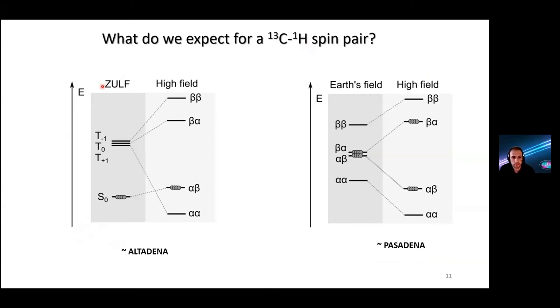So what do we expect for a simplified carbon-13 proton spin pair if we do irradiation in zero field where carbon-13 and proton eigenstates are triplet and singlet states? As Kaptein predicted, we expect that singlet order can be created and upon adiabatic transfer of the sample to high field we should expect distribution of populations like this. This is really similar to ALTADENA experiment as you can see here.